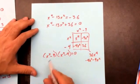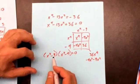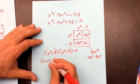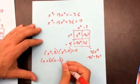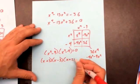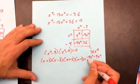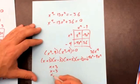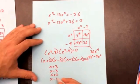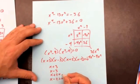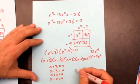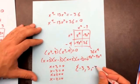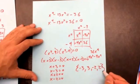Both of these are a difference of two squares. The difference of two squares factors into a plus and a minus: (x + 3)(x − 3) and (x + 2)(x − 2). Setting each factor equal to zero gives x = 3, x = −3, x = 2, x = −2 — those are all the solutions.